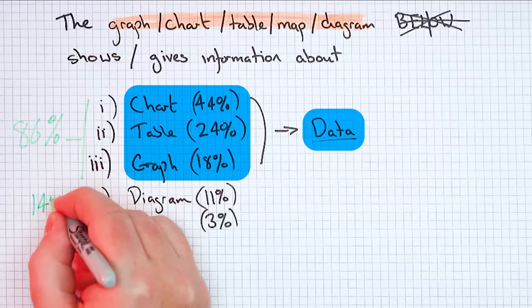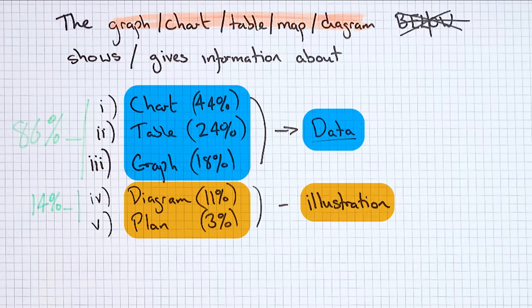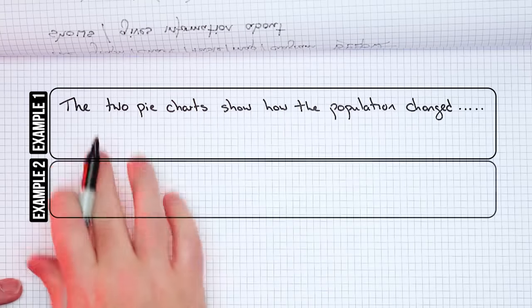That leaves us with 14% where it might be a map, a diagram, or a process. For all of these, we can change this to 'illustration.' An illustration is just a drawing on a piece of paper. That's what you can change it to when you're writing. So let's look at some real examples: 'The two pie charts show how the population changed' — we can change this to 'the data.' 'The maps below show how an industrial area' — 'the illustration.'